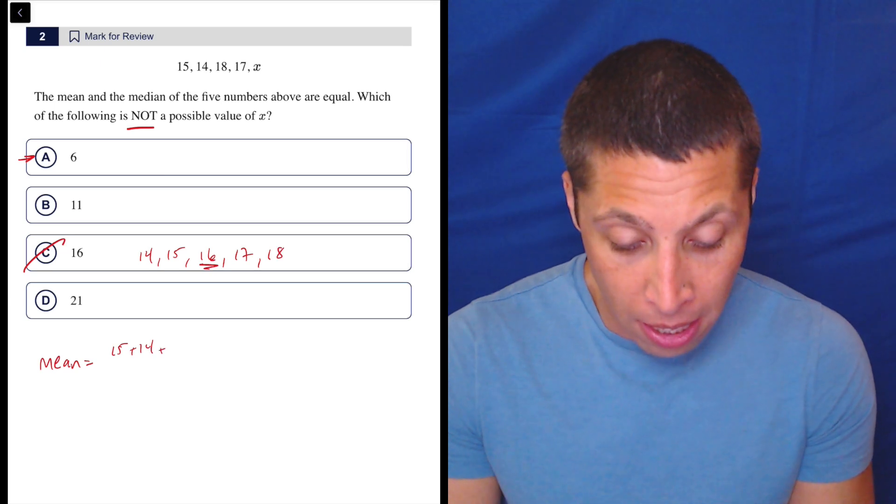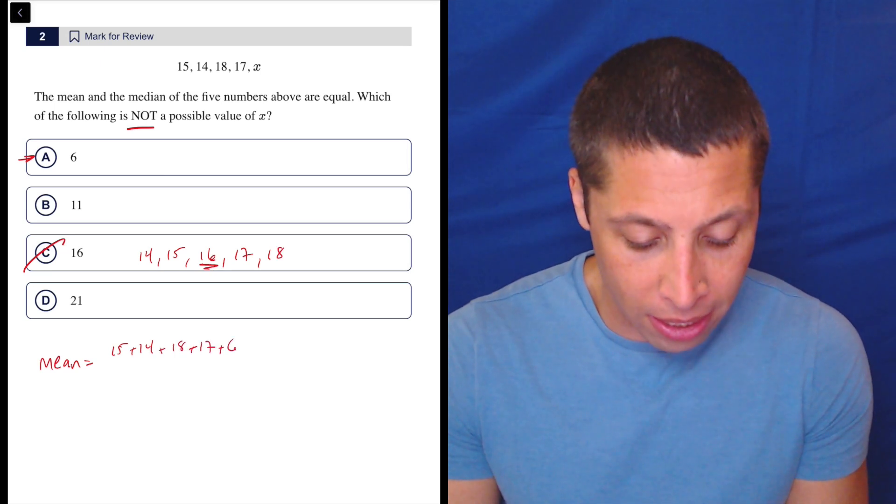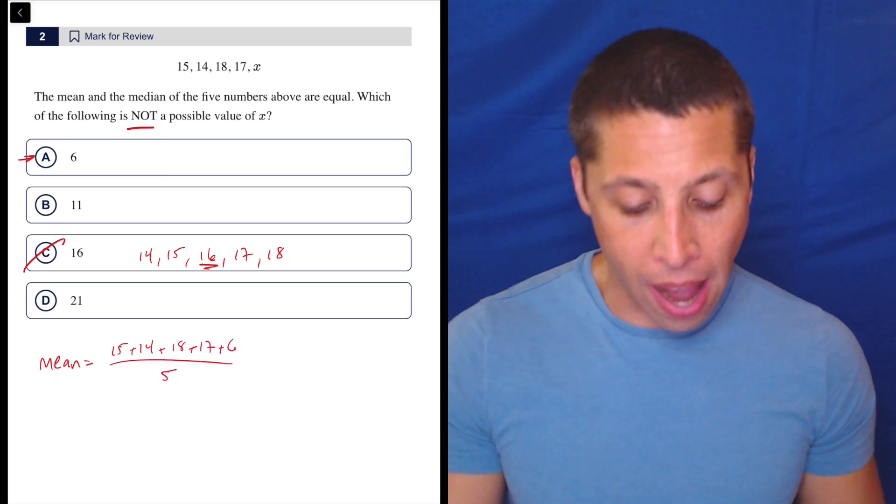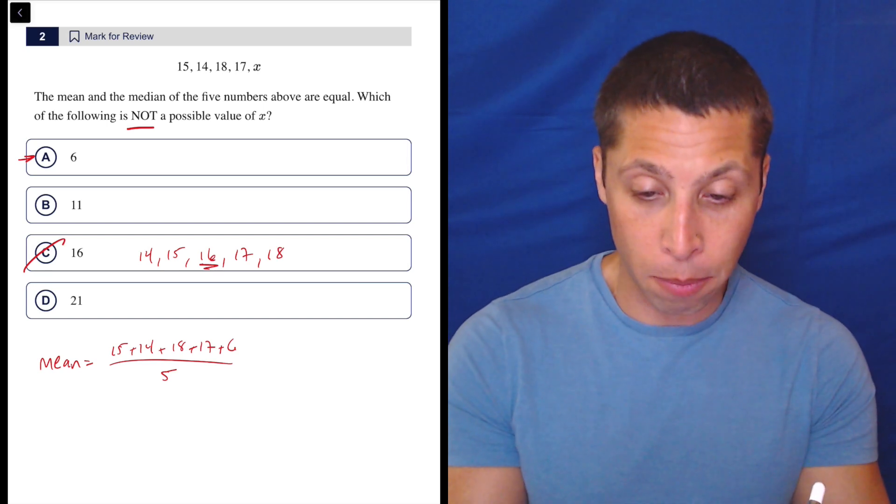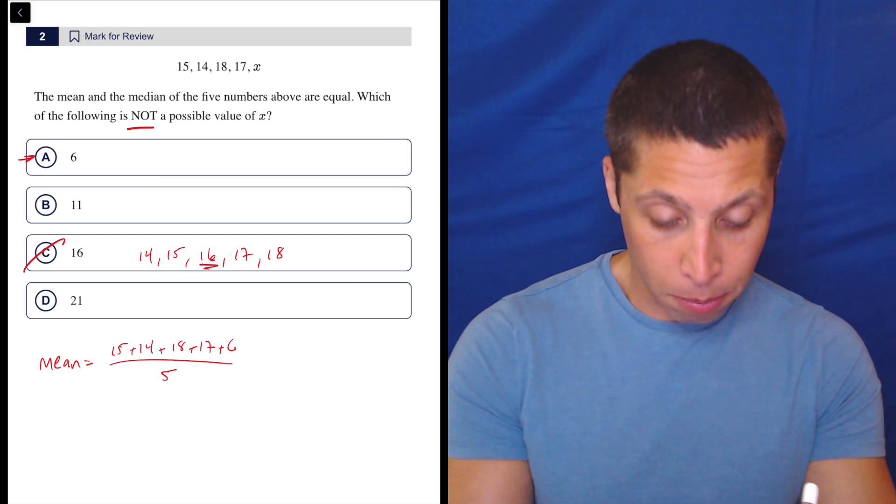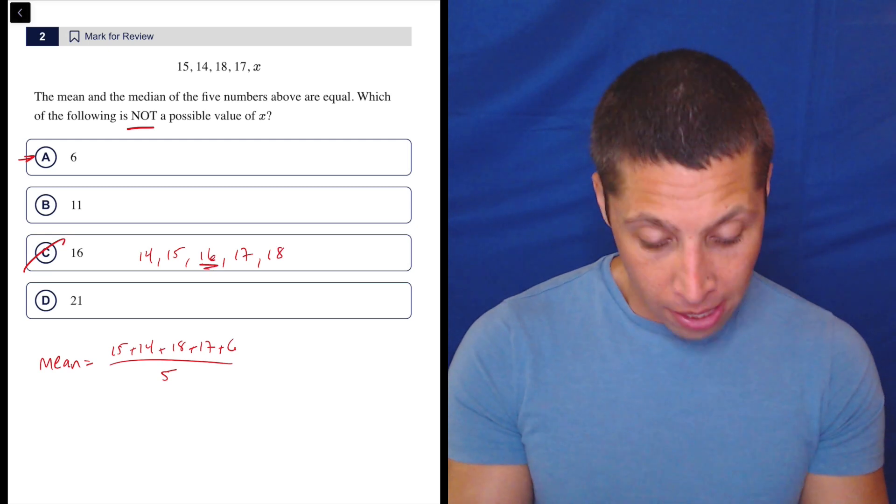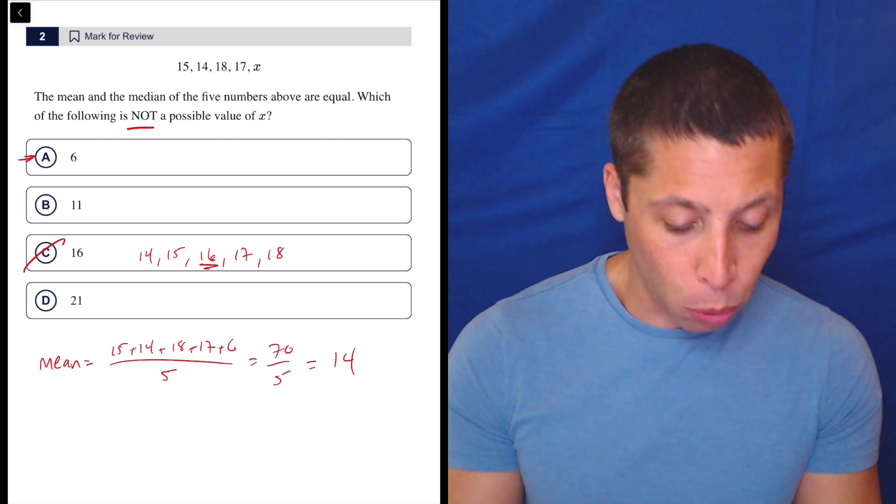15 plus 14 plus 18 plus 17 plus 6 divided by 5. That's how we're going to get the mean for that particular set. The sum of the numbers over the number of numbers. So 15 plus 14 plus 18 plus 17 plus 6 is 70 and 70 divided by 5 is 14.